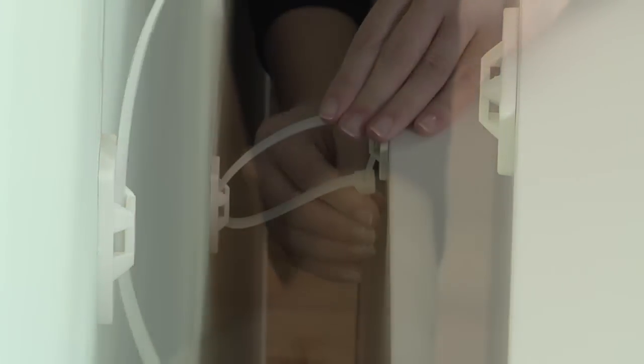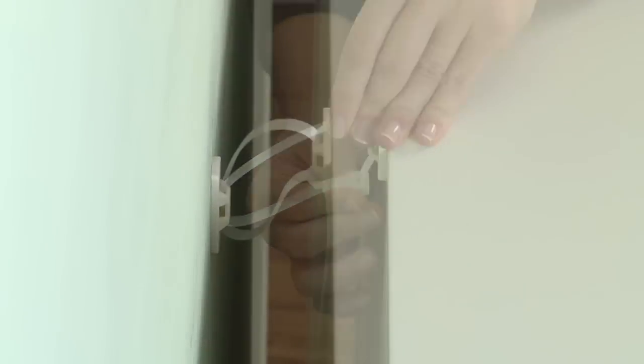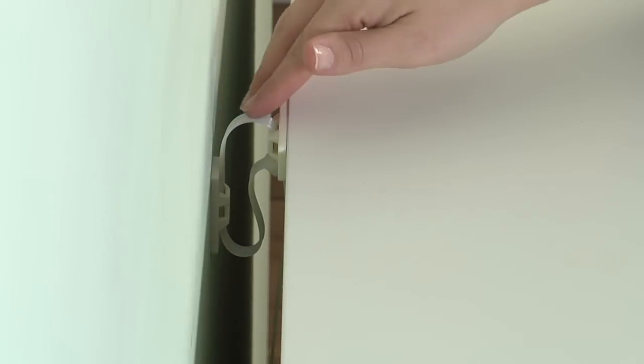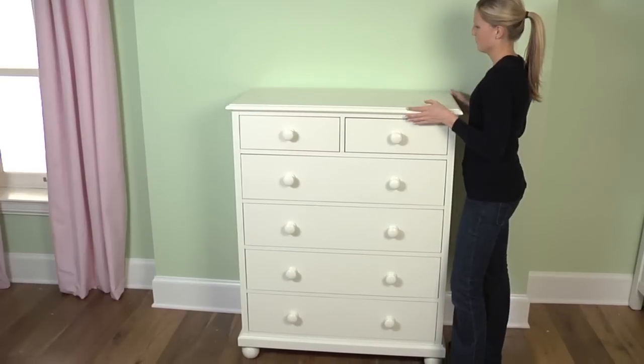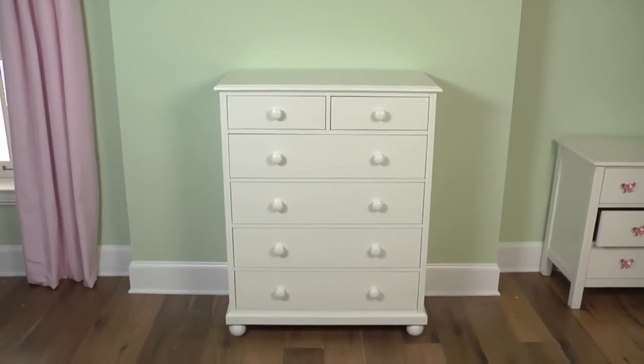Tighten the looped strap and push the furnishing all the way back to the wall, pushing any visible portion of the strap down. Your furnishings are now securely fastened to the wall.